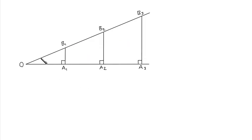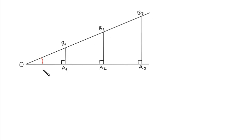Here we've got an angle at O. That angle has two lines coming out from it, forming an angle. We've got three vertical lines drawn between these two lines, and those three vertical lines form three triangles — a small triangle, a larger triangle, and the largest triangle. So three triangles that are all right-angled, as we can see from the symbol here. These three triangles all share the same angle at O. We're going to look at the ratio between two side lengths in each of those triangles.